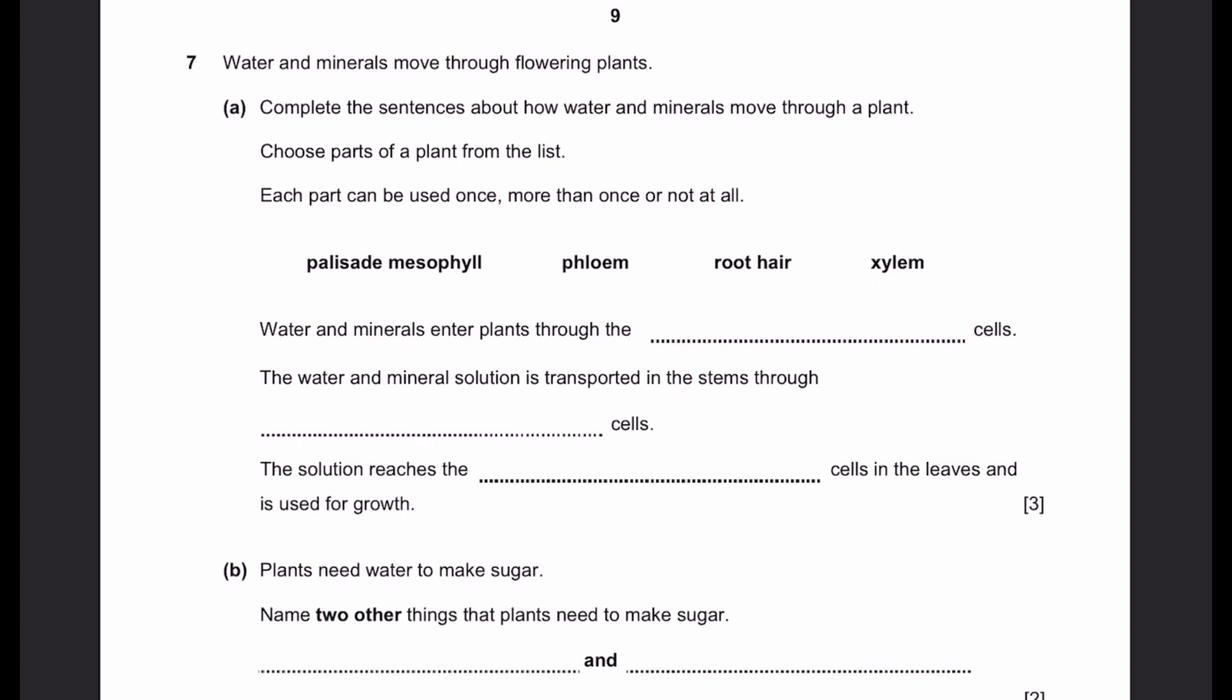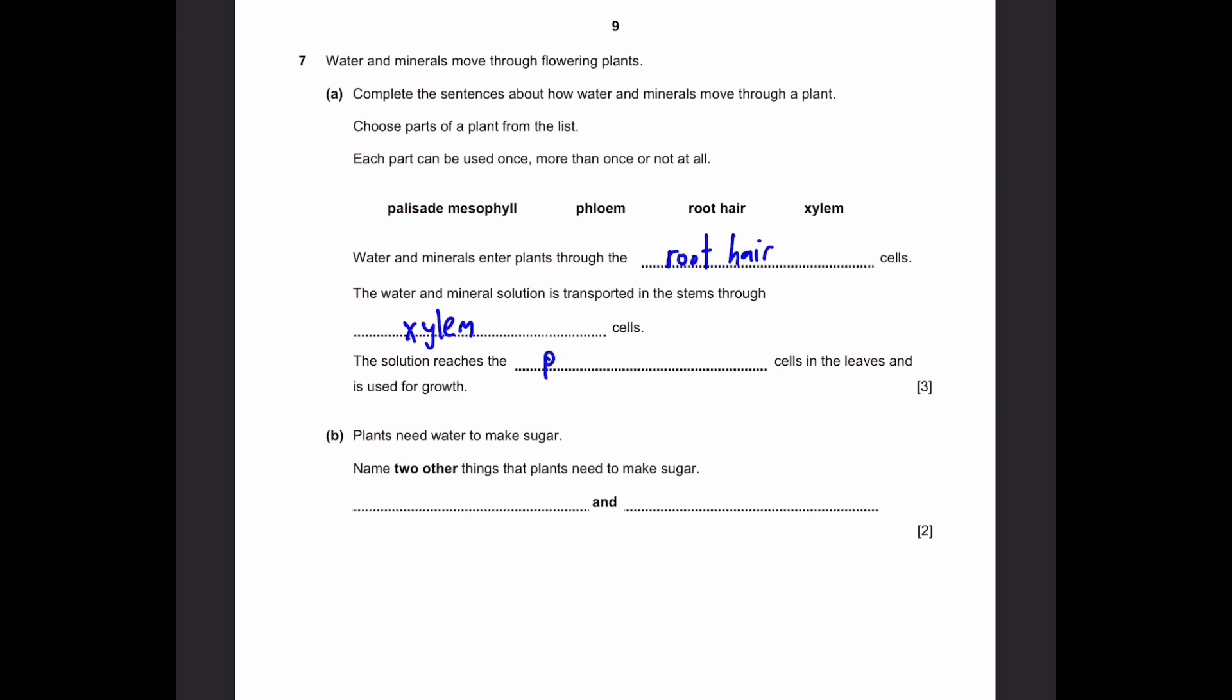Water and minerals enter plants through the root cells. The water and mineral solution is transported in the stems through the xylem cells. The solution reaches the palisade mesophyll cells in the leaves and is used for growth.